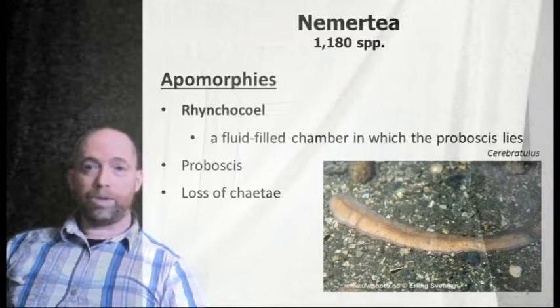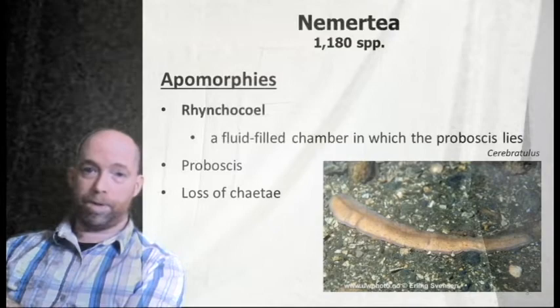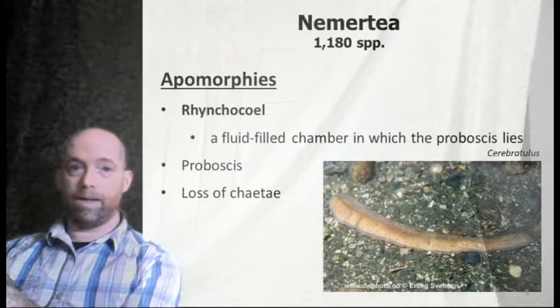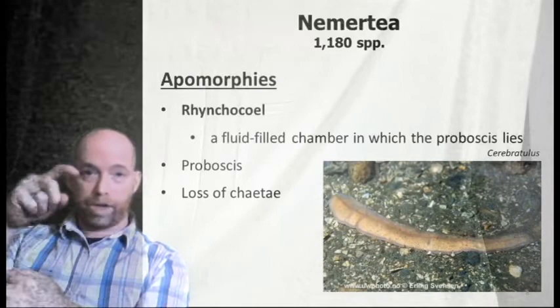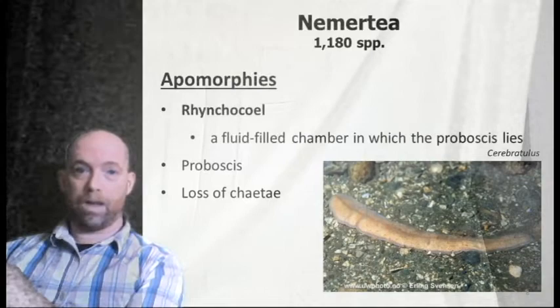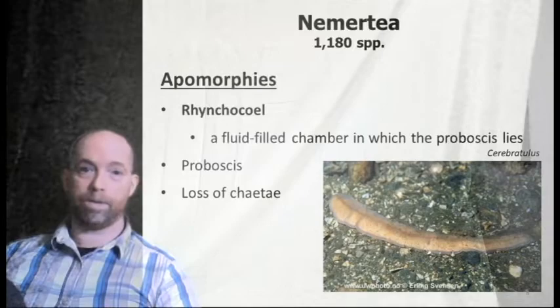An apomorphy for the nemerteans is the rhynchocoel — a fluid-filled chamber that contains the proboscis. They also lack chaetae, which is notable because the presence of chaetae is one of the apomorphies for ecdysozoans. This is yet another case where the principal apomorphy for a group is lost — evolution by loss, not simply evolution by gain.